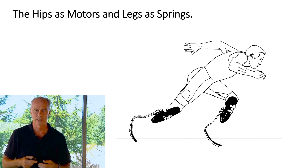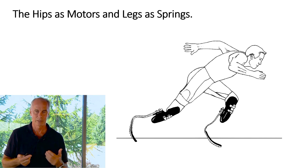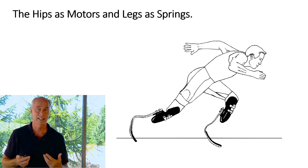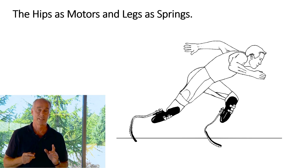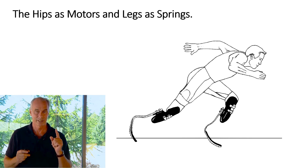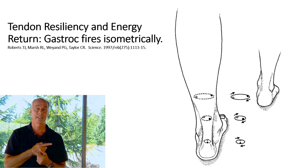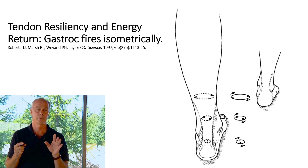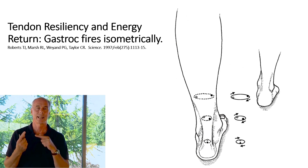Modern prosthetic limbs are a perfect example — they store amazing amounts of energy and function like tendons. The best example is the Achilles tendon. Recently they discovered that the Achilles tendon rotates 90 degrees before it detaches. Tibialis posterior rotates 45 degrees; the Achilles tendon rotates 90 degrees.